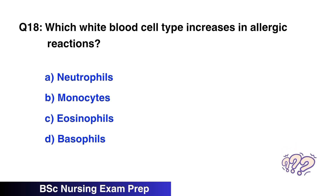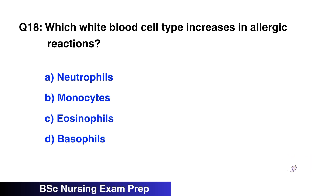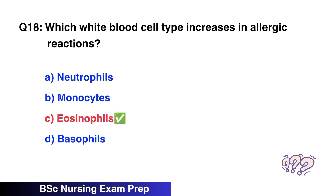Question number 18: Which white blood cell type increases in allergic reactions? The right option is C, eosinophils.